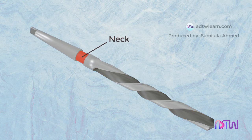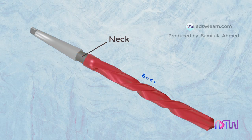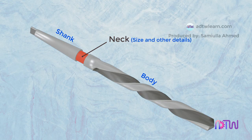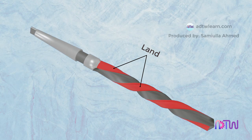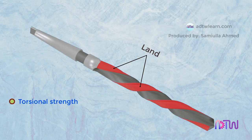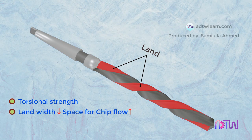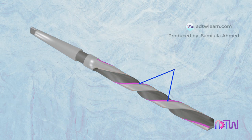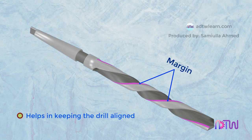This part is called the neck. It separates the main body from the shank, and size and other details are usually given on the neck. Land: the land is the part of the drill body between the flutes; it provides torsional strength to the drill. Reducing the land width increases the space for chip flow but reduces the strength. The cylindrical narrow strip present on the leading edge of the flute is called the margin; it helps in keeping the drill aligned during the drilling operation.